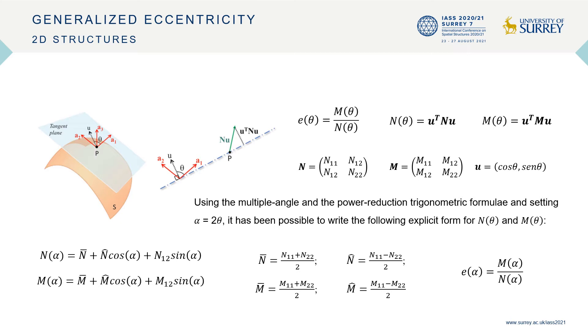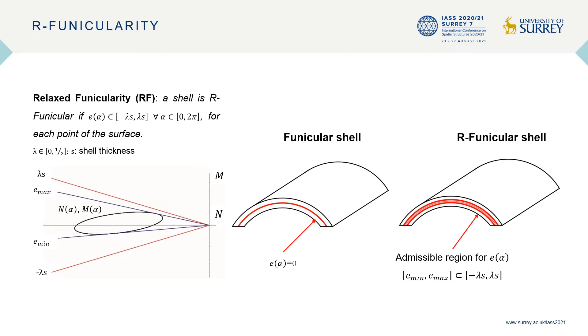In this way, we are able to know the value of eccentricity at each point of the surface and in each direction. The generalized eccentricity is graphically represented by an ellipse in the n-n plane when the angle alpha ranges between 0 and 2π. The slopes of the tangents to the ellipse from the origin of the plane represent the eccentricity extrema.